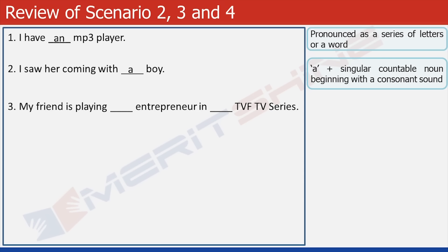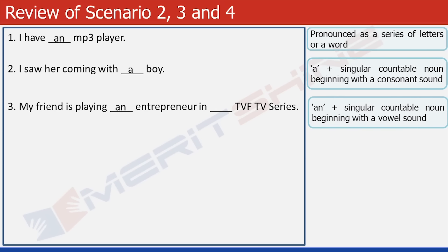Now try: My friend is playing dash entrepreneur in dash TVF TV series. The first blank takes AN because 'entrepreneur' has a vowel sound. The blank before TVF takes A because TVF is pronounced as a series of letters and T does not have a vowel sound. Try this: It's dash nice day today. The noun 'day' is modified by 'nice', and the initial sound of 'nice' is a consonant, so it would take A.